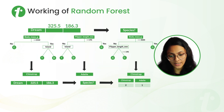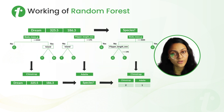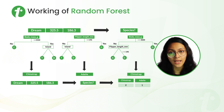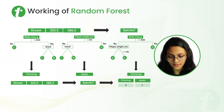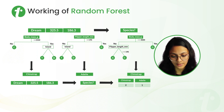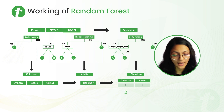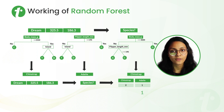We have new input data and we have to determine the species of the penguin. We pass this input to our model with those three decision trees. The first decision tree predicts Chinstrap, the second predicts Adelie, and the third also predicts Chinstrap. So we have two votes for Chinstrap and one vote for Adelie, meaning the final decision of our random forest model is that it's a Chinstrap.